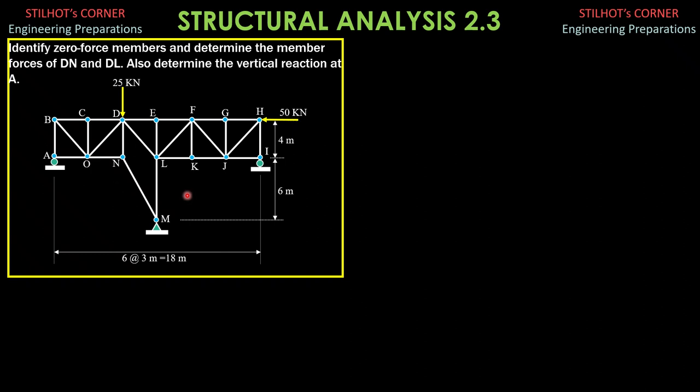So that means we can analyze this truss. So let's put the reactions first. So, Ra. Here, we have 2 reactions, My and Mx. But Mx is obviously 50 kN rightward, as shown. If we sum up forces horizontal, then we have R sub I at I.